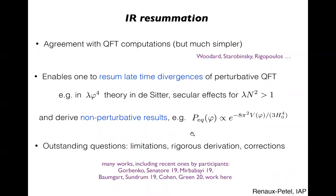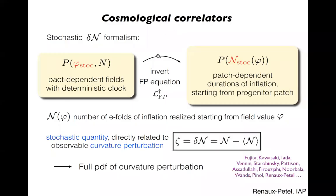Despite this, there are a number of outstanding questions in this field: what are the limitations of stochastic inflation, how to rigorously derive it, as well as corrections to it. This has been the subject of many works, including recent ones by participants, and so we expect interesting discussions. Something worth stressing in a workshop about cosmological correlators is that the stochastic formalism is not only useful to study test scalar fields in de Sitter — it's also a useful tool for inflation to compute quantities of direct observational relevance. The Fokker-Planck equation describes the time evolution of inhomogeneities of the scalar field in the various Hubble patches, with a clock that is the same in all patches.